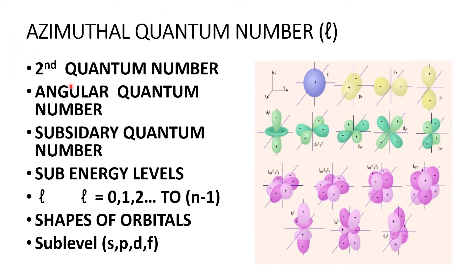Azimuthal quantum number is the second quantum number, also called the angular or subsidiary quantum number. It gives information about the sub-energy levels, sub-shells, or sub-levels. It is represented by the symbol small l. The values are 0, 1, 2, 3, 4, and so on. The value of the azimuthal quantum number is derived from the principal quantum number by subtracting 1. It gives information about the shapes of the orbitals. We have four sub-levels: S, P, D, and F sub-shells.